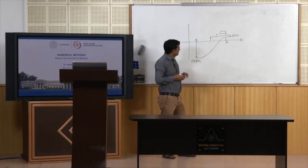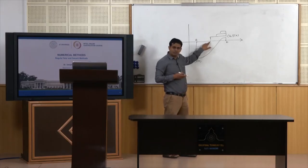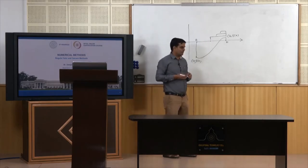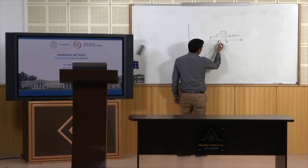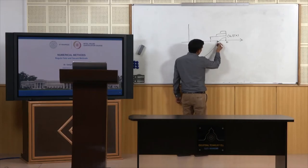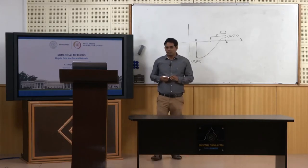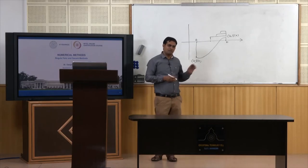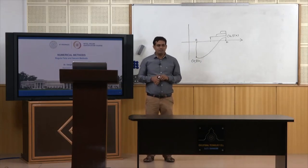Can we have other methods where instead of such a midpoint as the next iterate we use some other idea? If the root is close to one of the endpoints, our next iterate would come quite closer to the root, giving us better convergence. Regula Falsi as well as the Secant method use this idea — using a weighted average instead of the midpoint to find the next iterate.